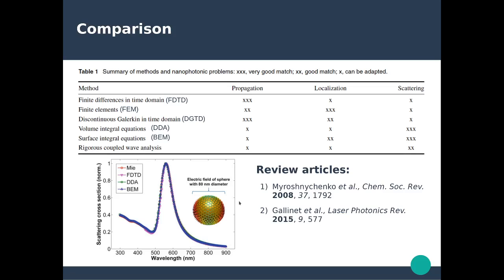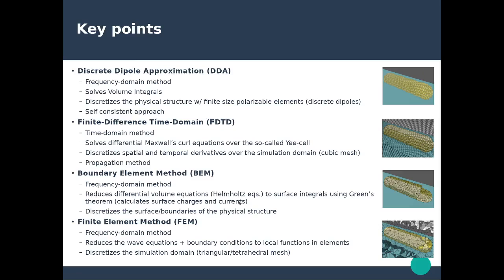Just to wrap up, this is a summary of the key points we've discussed — the four major methods used to solve electromagnetic problems in nanophotonics and plasmonics: DDA, FDTD, BEM, and FEM — broken down by type: frequency domain versus time domain, what form of Maxwell's equations they solve (integral versus differential), and how the discretization of the geometry and simulation domain is handled. With this, that concludes chapter 7 on numerical methods.